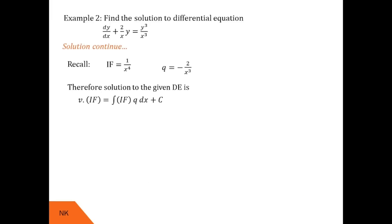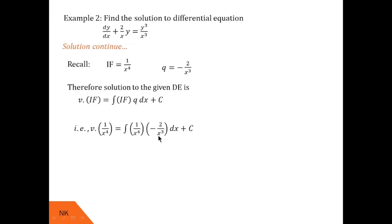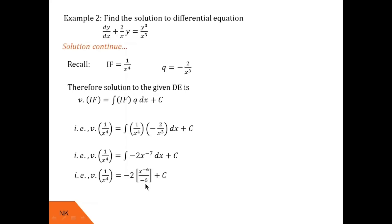Substituting into the solution formula: v·(1/x⁴) = ∫(1/x⁴)·(−2/x³) dx + C = −2∫(1/x⁷) dx + C. Integrating 1/x⁷ gives x^(−6)/(−6), so after simplification the RHS becomes 1/(3x⁶) + C. Finally, substituting v = 1/y² gives the complete solution to this differential equation.